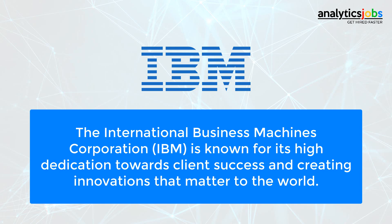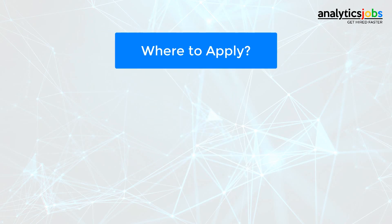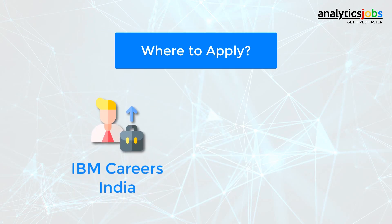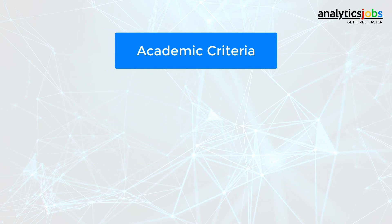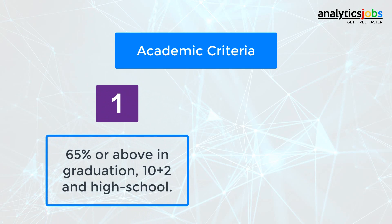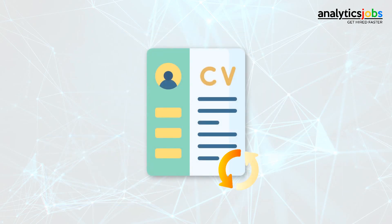As always, let's first start with where to apply. Once you find a role that interests you, the first step is to complete your application online. To apply at IBM, one needs to visit IBM Careers India or the IBM official website. The basic academic criteria to get employed at IBM are: 65% or above in graduation, 10+2 and high school, and no active backlog at the time of interview. Your application will be read by real IBMers who are experts in screening resumes and specialists in their respective fields.